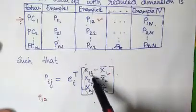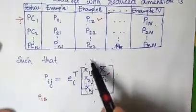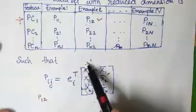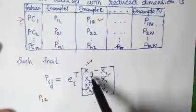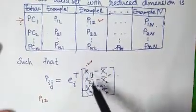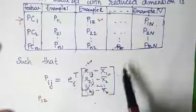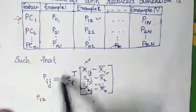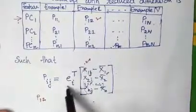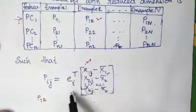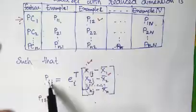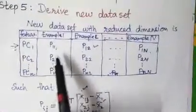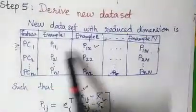For j=1 we consider example 1, for j=2 we consider example 2, and so on. Multiplying these two matrices gives the value of P_ij — P11, P12, and so on — forming the reduced dataset.